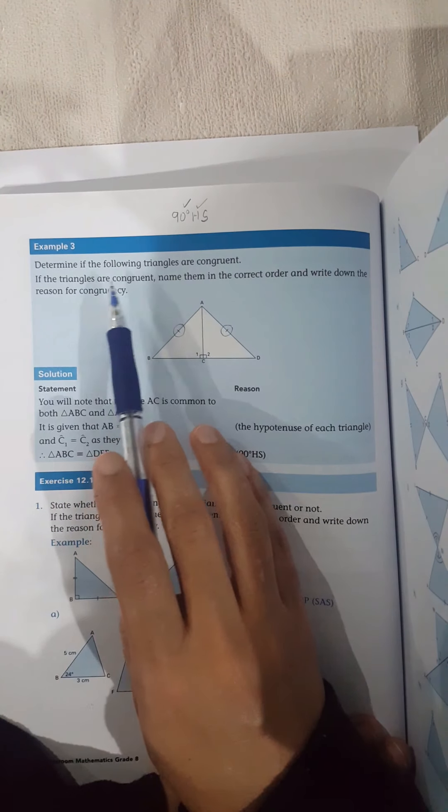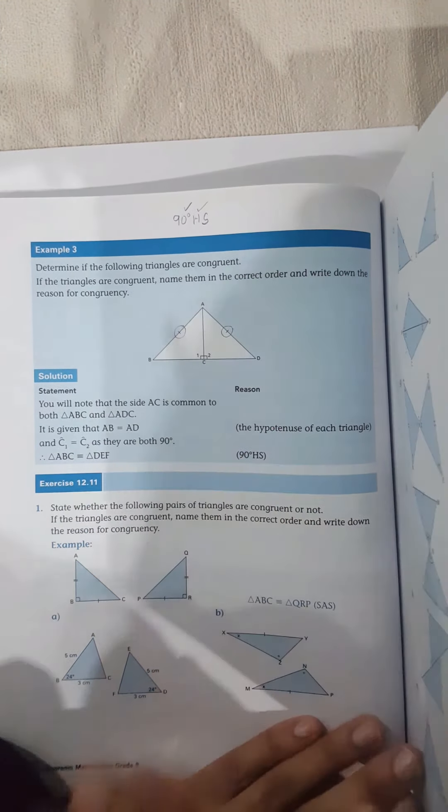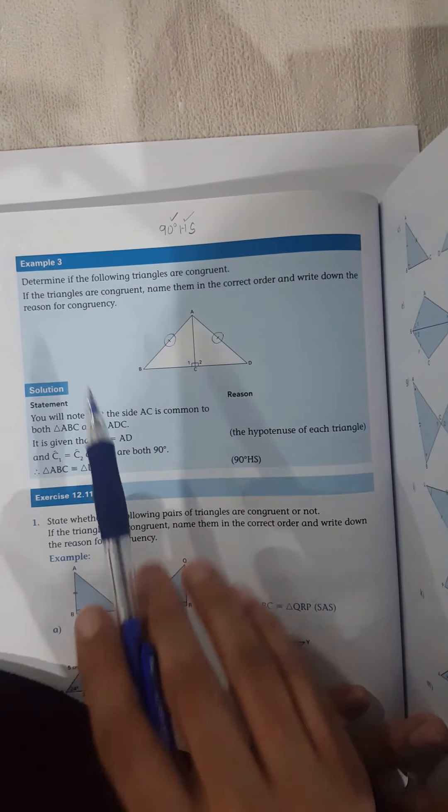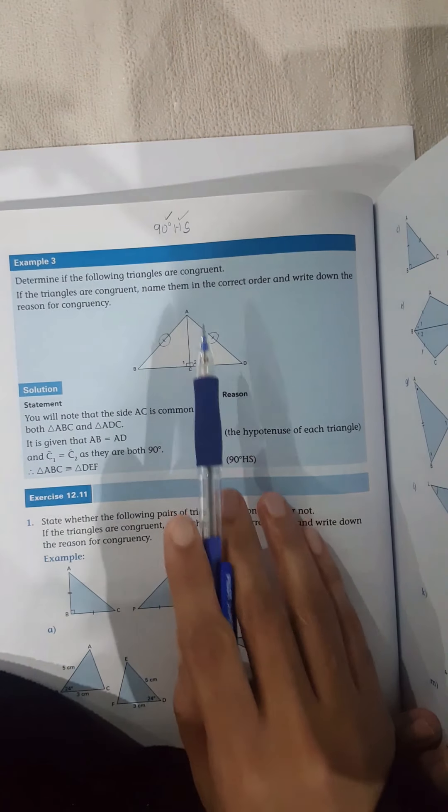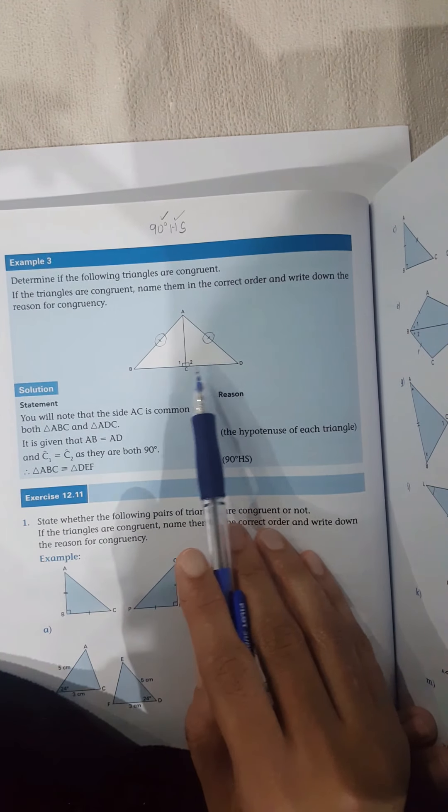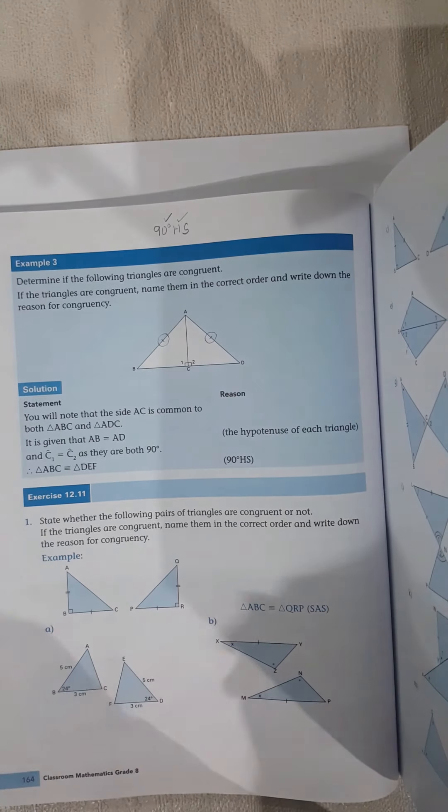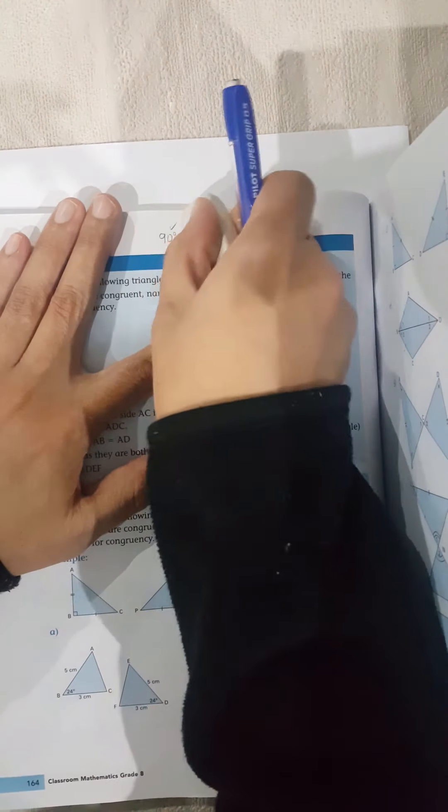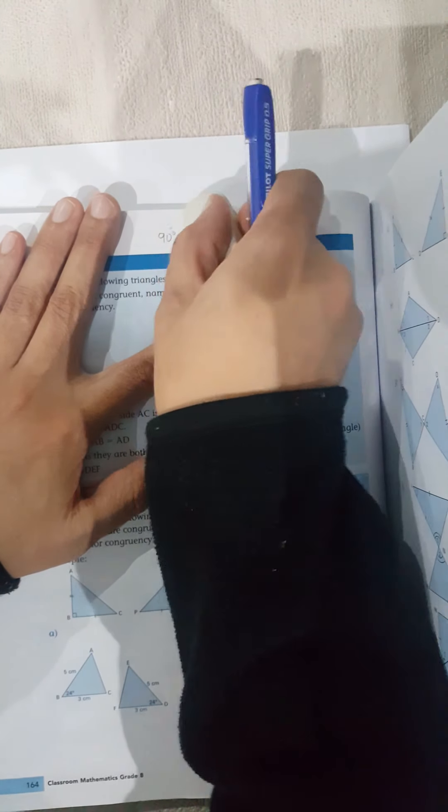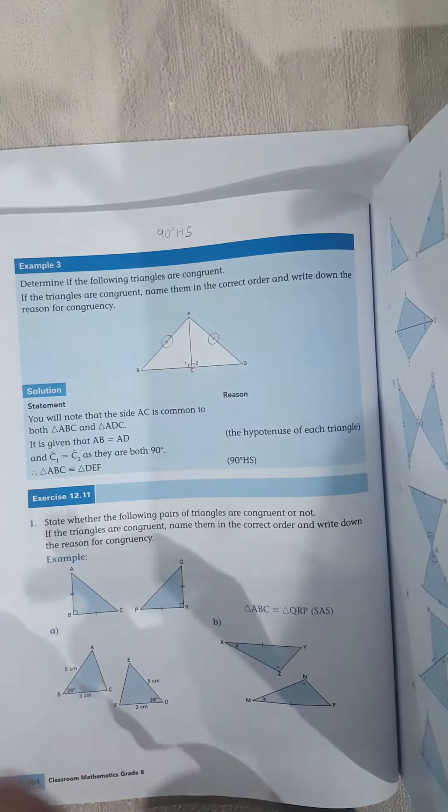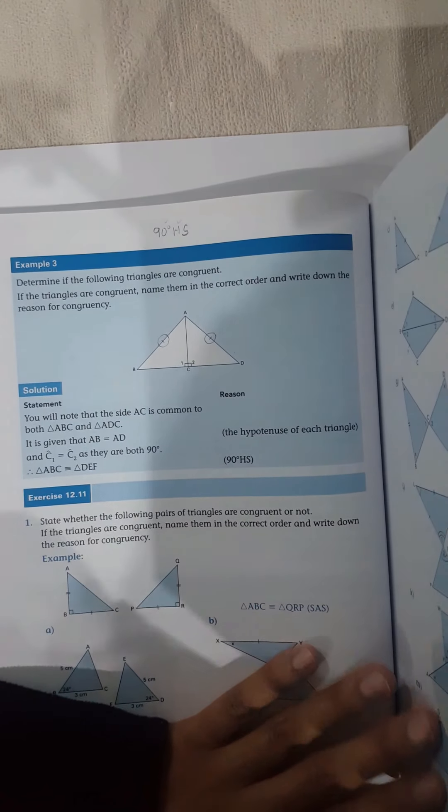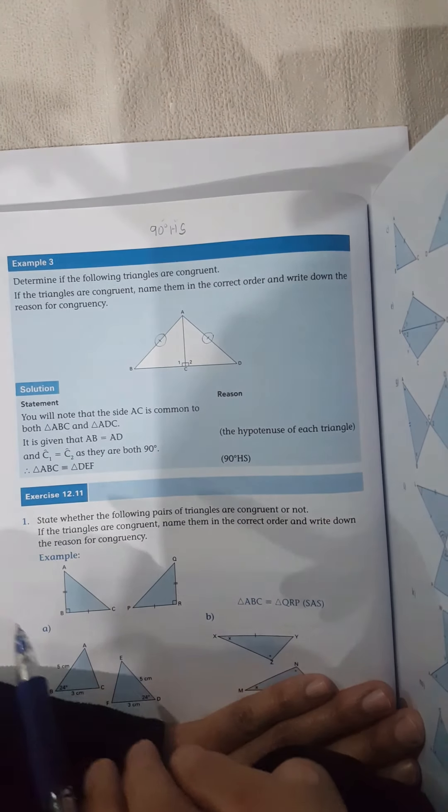So it says determine if the following triangles are congruent. Okay, so I'm looking for, if I look at these triangles here, I can immediately see that I'm looking for 90 degrees hypotenuse side. So what I'm looking for is 90 degrees hypotenuse and side. So let's see if I've got this condition of congruency.